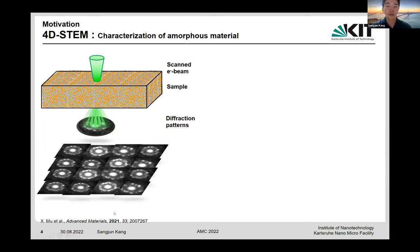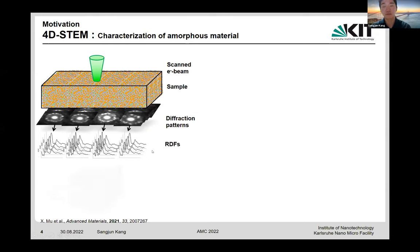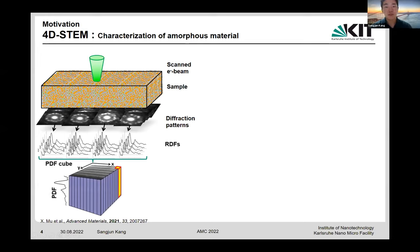We calculate the structure factor based on the local diffraction pattern, and by Fourier transformation of the structure factor, we obtain the pair distribution function (PDF). The PDF describes atomic density by finding atomic pairs separated by a certain distance; the first and second peaks correspond to distances of the first and second nearest neighbors. By mathematically processing all the diffraction patterns, we obtain spatially resolved PDF as shown in this 3D format data. With this method, we can quantify the atomic density and atomic packing structure of nanoglass at the nanoscale.